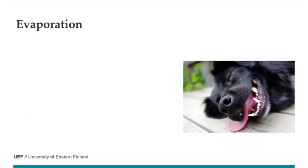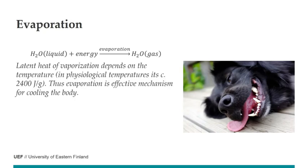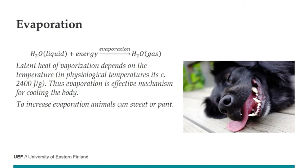For evaporation, we release energy by turning liquid into gas. When we release that energy we release heat. The latent heat of vaporization depends on temperature, and at physiological temperatures it is about 2400 joules per gram — making it a quite effective mechanism to cool the body. That is why we use it not only through respiration but also through sweating, or in the case of dogs, panting.